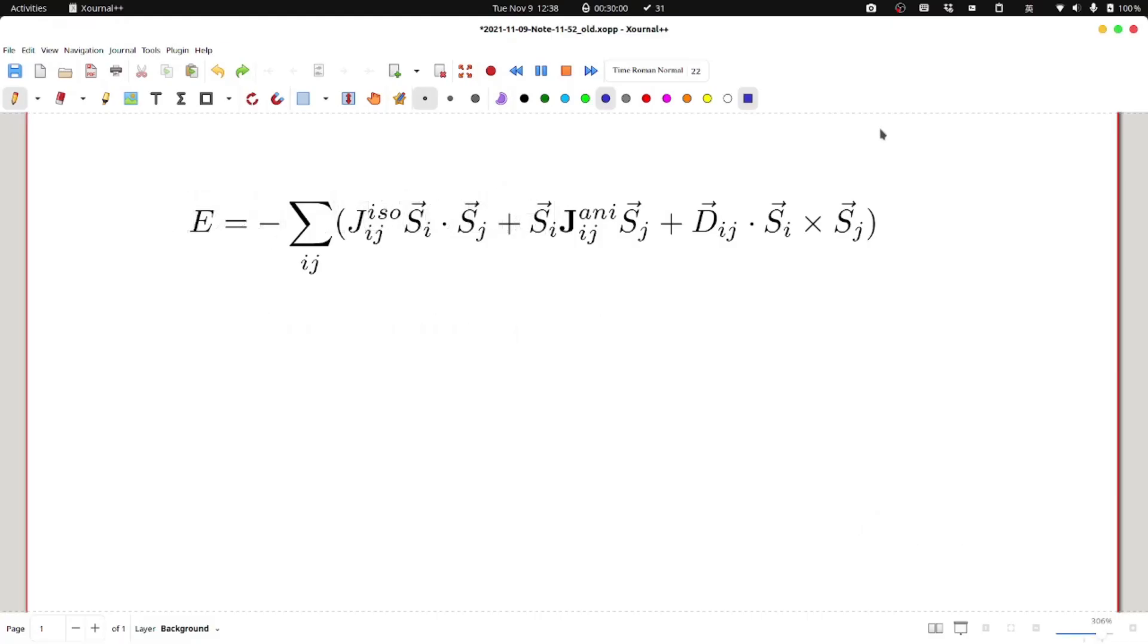So in this video, we're going to discuss the conventions we used. In the current version of TB2J, it can output three terms: